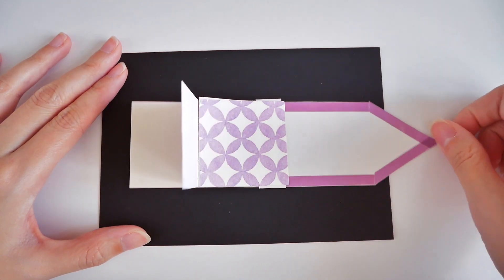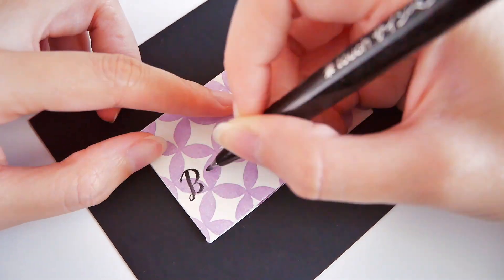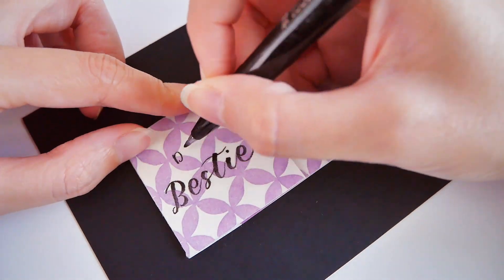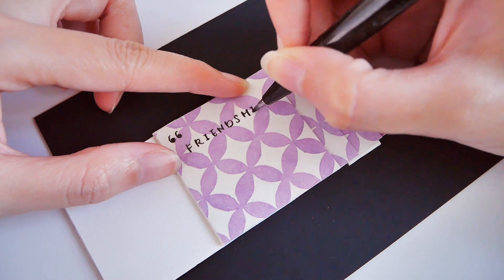I also made another card for friendship using another pattern paper. You can also customize the message on each square. Here, I'm writing a quote and also Happy Valentine's Day on the last square.